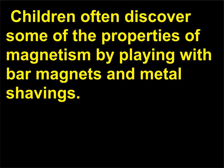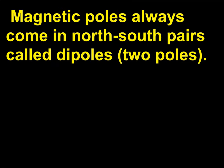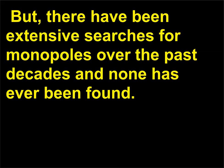Children often discover some of the properties of magnetism by playing with bar magnets and metal shavings. In this way, you can easily discover that magnets have opposite poles and create magnetic fields. Magnetic poles always come in north-south pairs called dipoles, two poles. Some theories predict the existence of isolated north or south poles, called monopoles. But there have been extensive searches for monopoles over the past decades and none has ever been found.